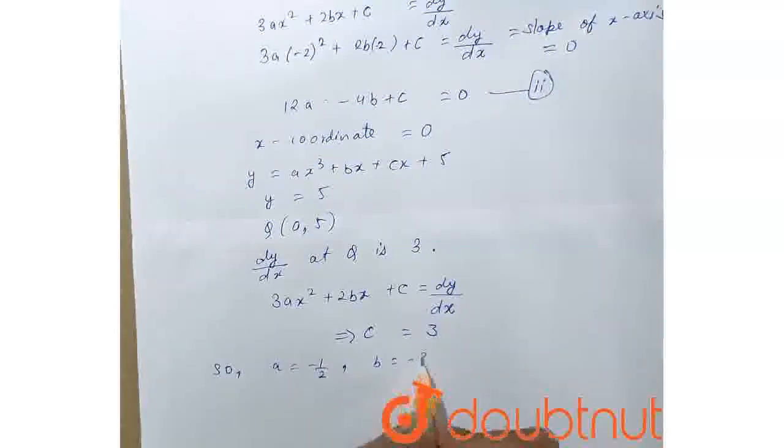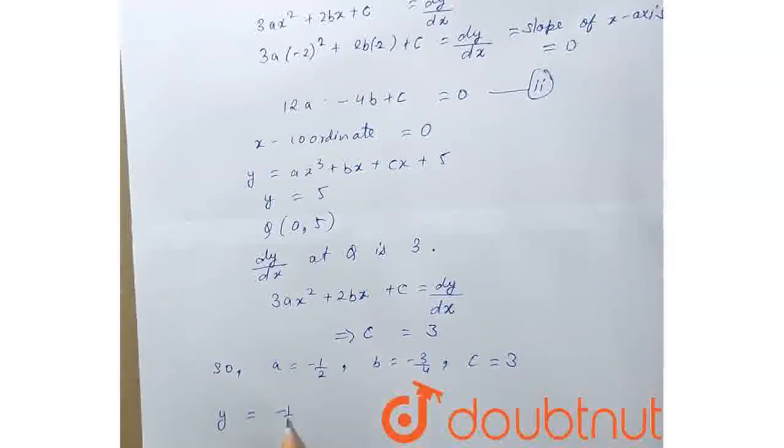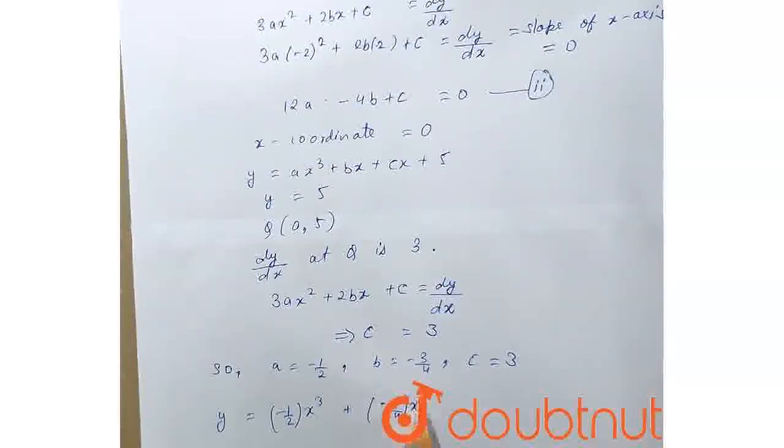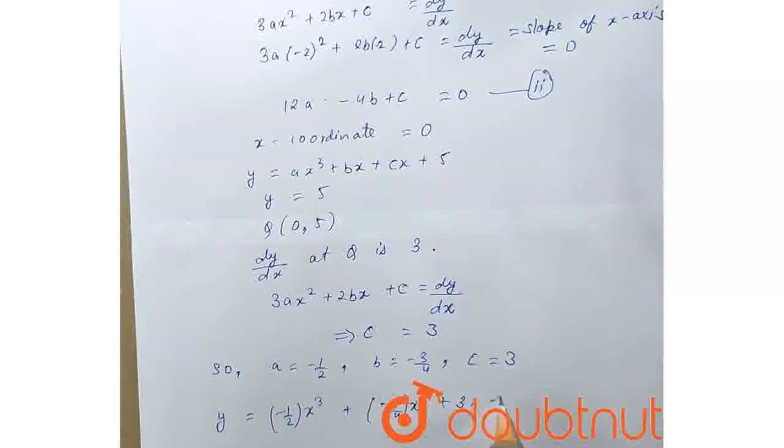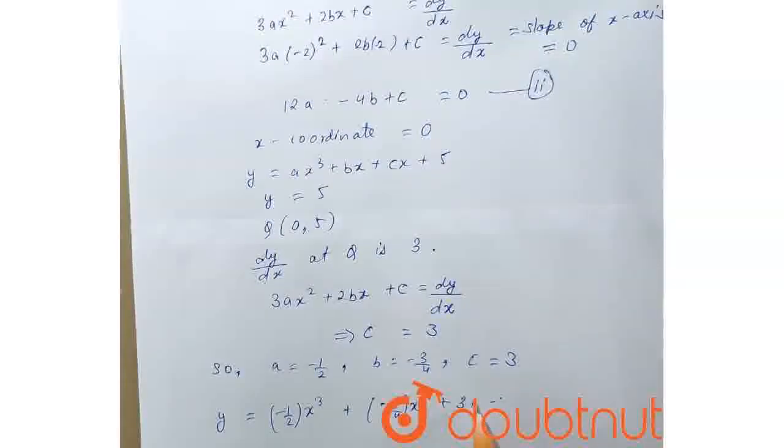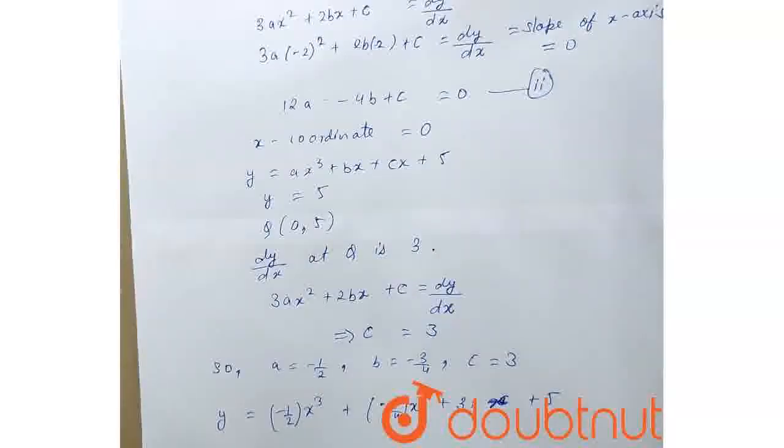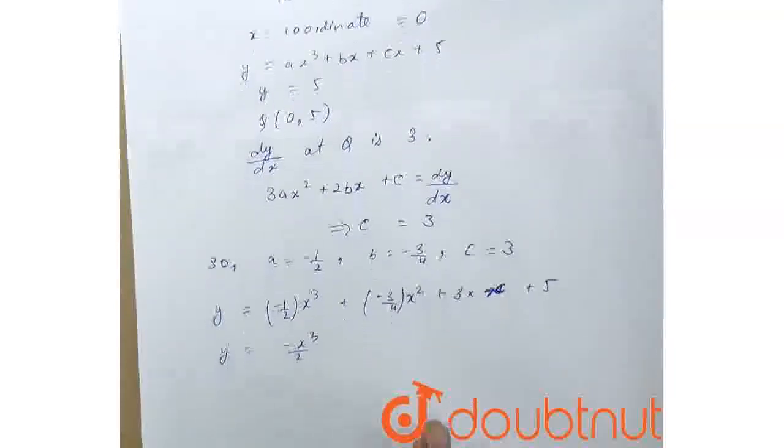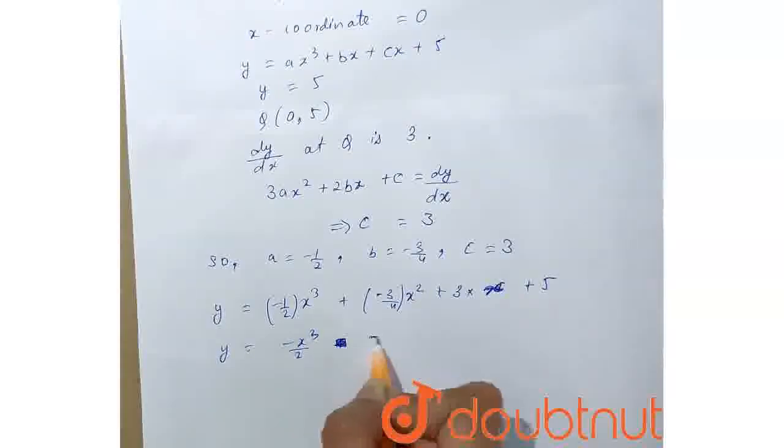So similarly we will get a equals minus 1/2, b equals minus 3/4, and c equals 3. So the curve becomes y equals minus x³/2 minus 3/4 x² plus 3x plus 5.